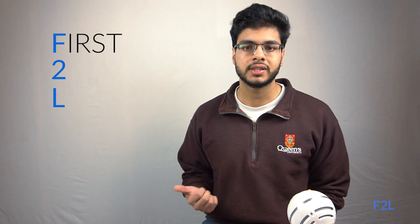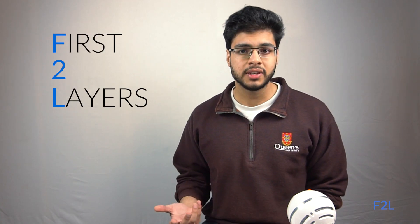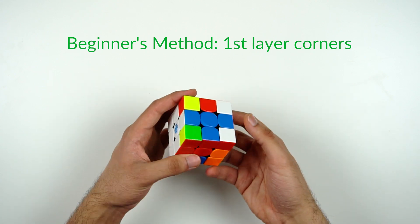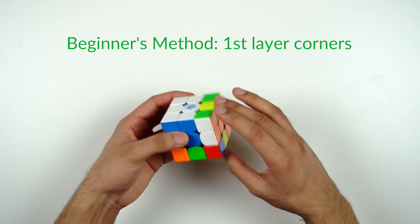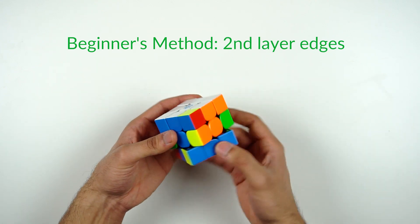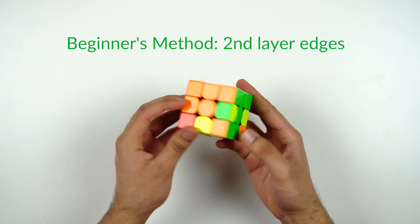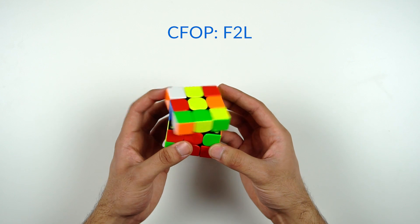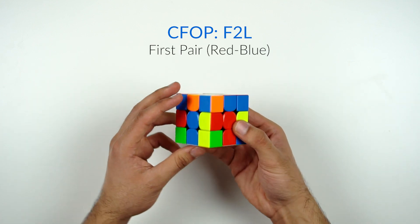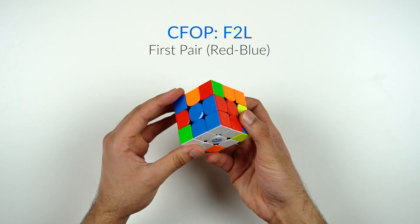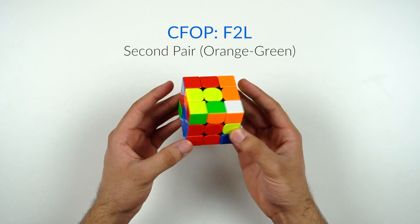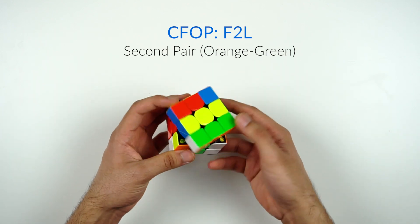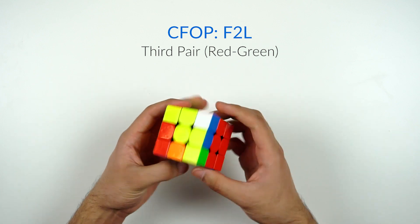The second step of CFOP is called F2L, and it's also an acronym that stands for first two layers. In the beginner's method, you would solve the cross, then move on to solving the corner pieces, and then the edge pieces all one by one. With F2L, you essentially are solving both the first layer and the second layer at the same time by creating these corner and edge pairs and inserting them into their designated slots. You do this four times, and you complete F2L solving the first two layers.